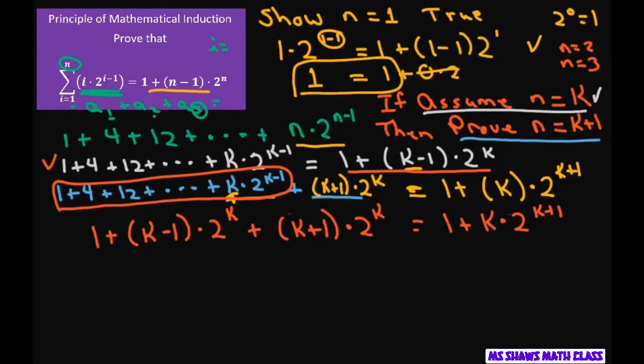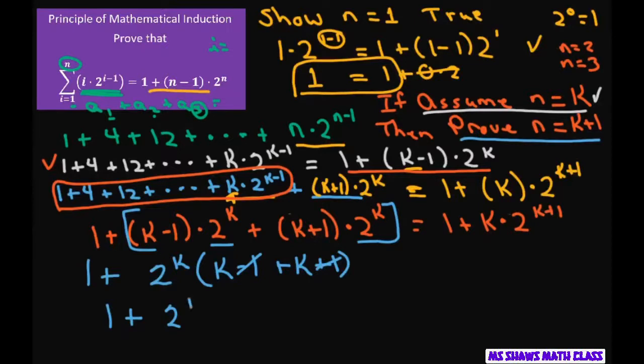Next, let's simplify the left-hand side. I can write 1 plus and factor out this 2 to the k when we're dealing with this part right here. So this would be 2 to the k times k minus 1 plus k plus 1. So we have 2 to the k times 2 to the little k. So this is this one, 2k, and then I put this one second.